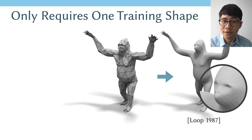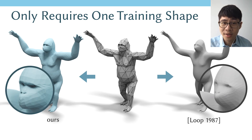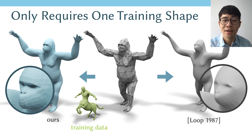Let's look at some results. Classic loop subdivision may overly smooth the shape and remove important features. In contrast, neural subdivision subdivides the mesh differently based on local geometry appearance, leading to better feature preservation. Surprisingly, in this experiment we only need a single shape in green during training — we can train on a single object and generalize to unseen shapes such as this gorilla mesh.